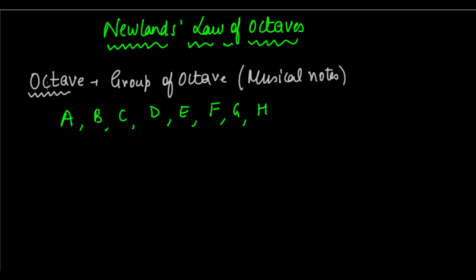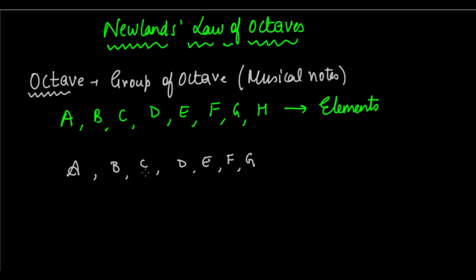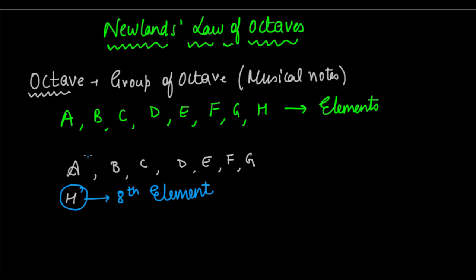He arranged elements in increasing order: A, B, C, D, E, F, G — seven elements. Then in the next line, he again started with H. He noticed one thing: when elements are arranged in increasing order of their atomic mass, the eighth element repeated the properties of the first element.